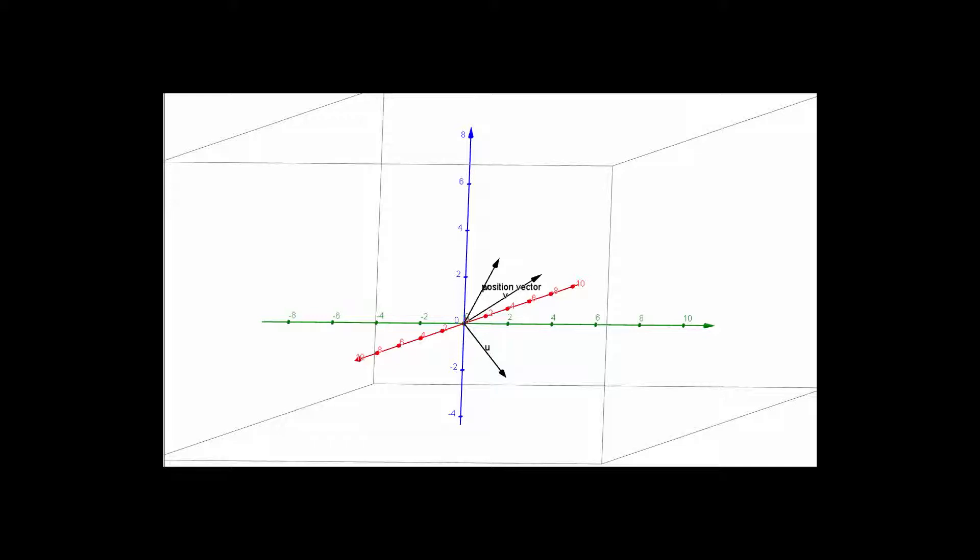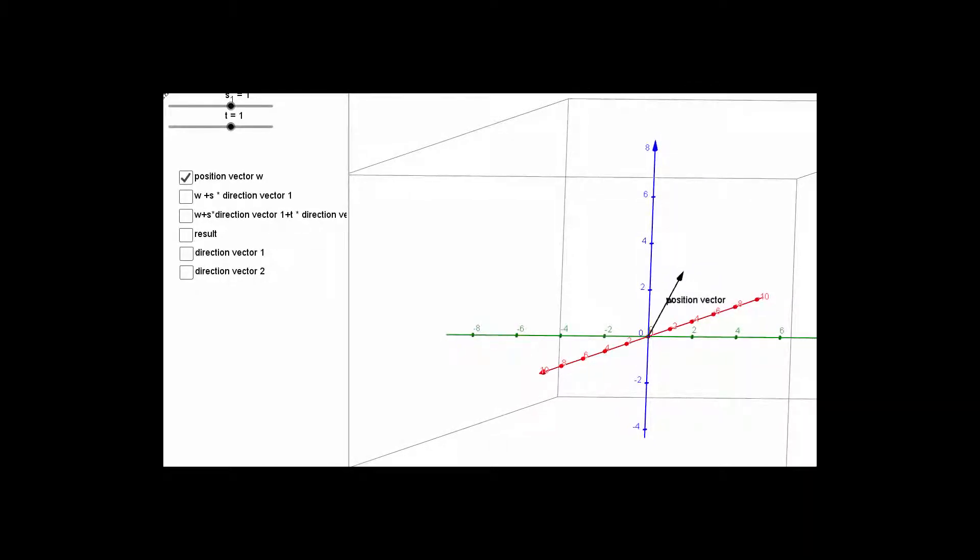Now we're going to be adding a scalar times those direction vectors to the position vector. My scalars are S and T, which are right over here, controlled by these sliders.